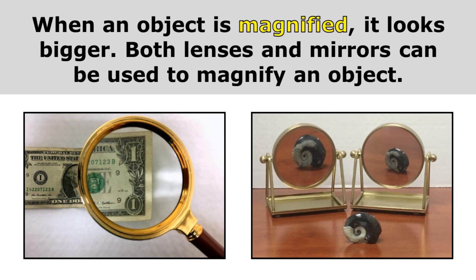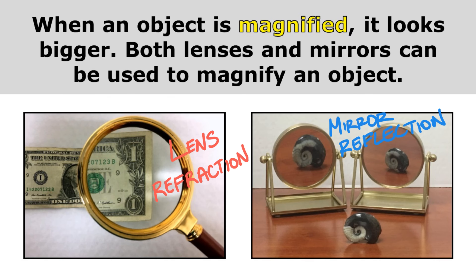When an object is magnified, it looks bigger. Both lenses and mirrors can be used to magnify an object. If you see a lens, know that lenses refract light — so if a lens is magnifying an object, that is happening through refraction. But if you see a mirror magnifying an object, that must be happening through reflection, and that happens when the mirror is curved instead of flat. So lenses and mirrors can both magnify an image, but lenses always work by refracting light and mirrors reflect light.